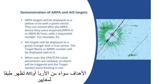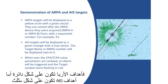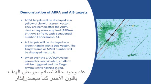Targets from AIS or ARPA are displayed according to standards. An ARPA target is a circle and an AIS target is a triangle. If there is a collision warning, the targets will be flashing in red and there will be an alarm.